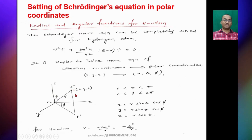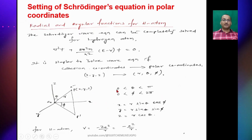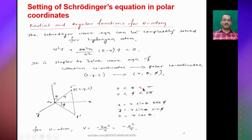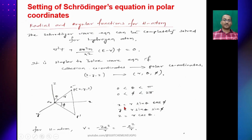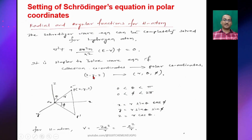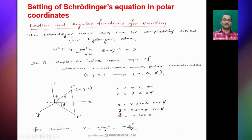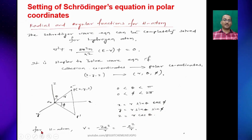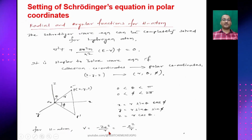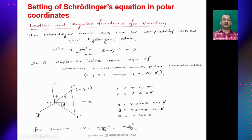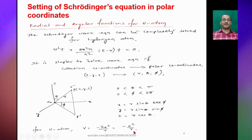The position of the electron is at point P(x,y,z), where 0 < θ < π and 0 < φ < 2π. Converting Cartesian to polar coordinates: x = r sinθ cosφ, y = r sinθ sinφ, and z = r cosθ. For a hydrogen atom the potential energy V = −Ze²/r, and since Z = 1, this becomes V = −e²/r.